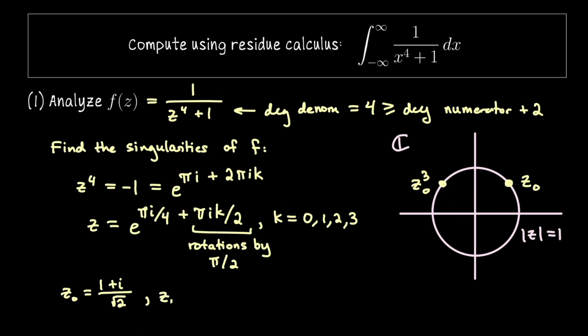And if you prefer you could write that as negative 1 plus i all over the square root of 2. Another rotation by pi over 2 lands us here. I'm going to call that negative z naught so it's negative 1 minus i all over the square root of 2. And then one more rotation puts us here and that is negative z naught cubed. So 1 minus i all over the square root of 2.